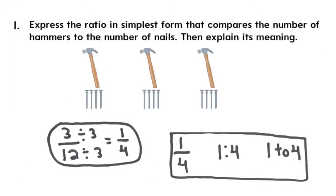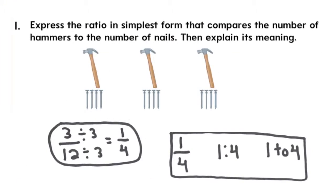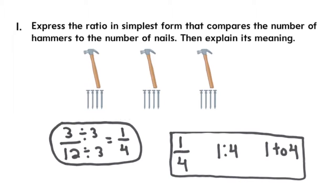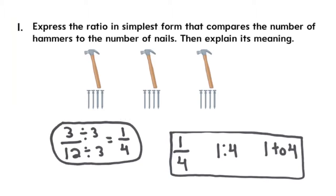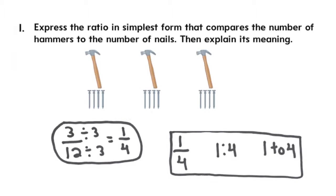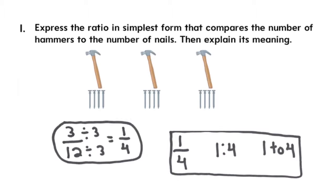In example one, they're asking you to write the ratio of hammers to nails in simplest form. What you would do is count the hammers - you would see that you have three. That's your numerator, since that is the first item they asked for. Then you count the number of nails. There are 12. That would be your denominator.